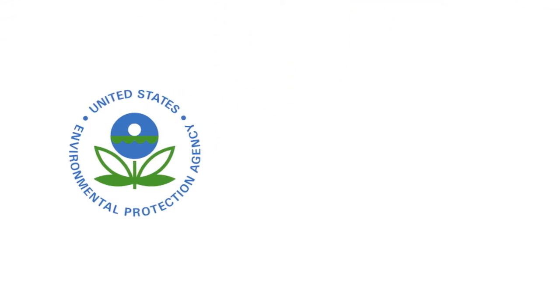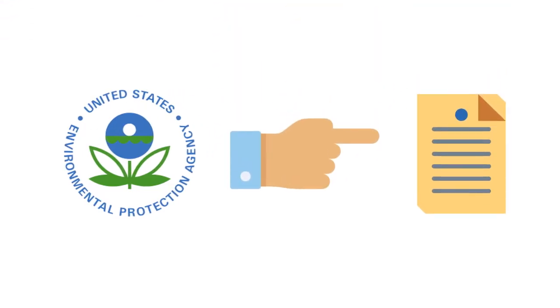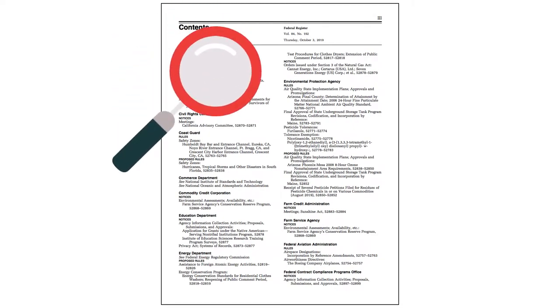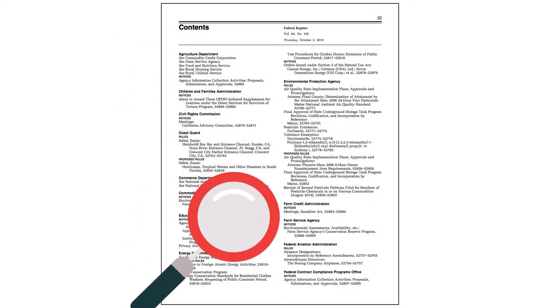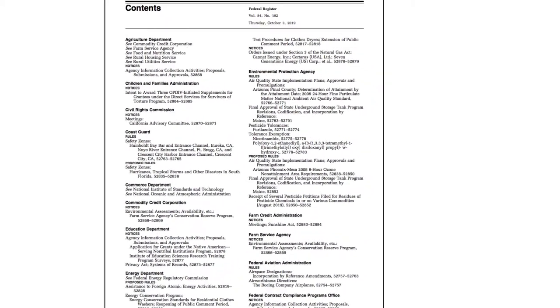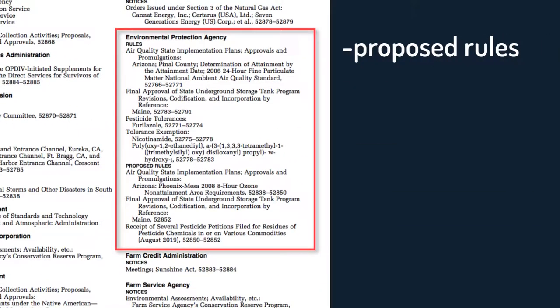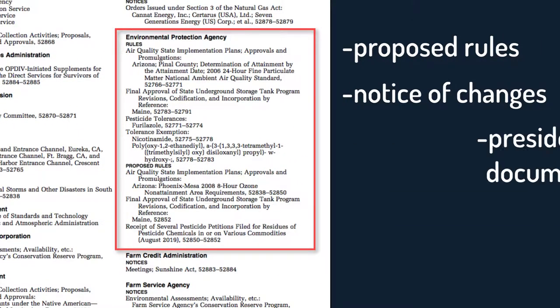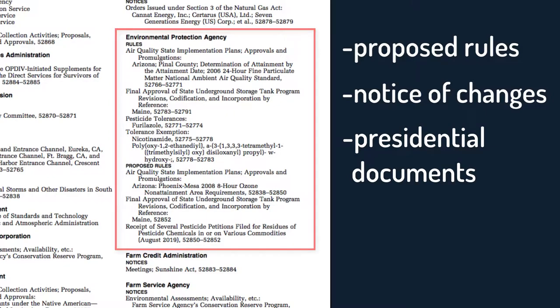When an agency creates a rule or regulation, they notify the public through the Federal Register. The Federal Register is a daily publication that includes documents for public inspection. This includes proposed rules, official notice of changes, and presidential documents.